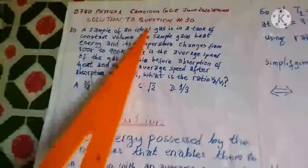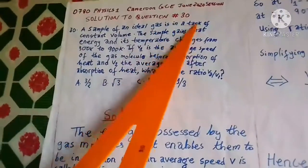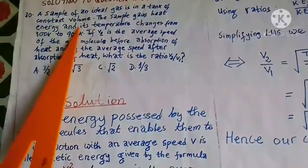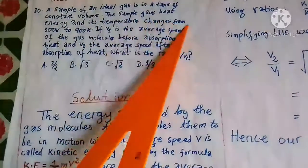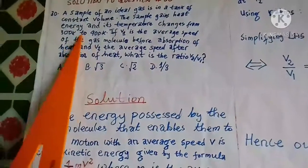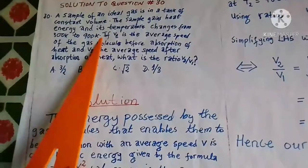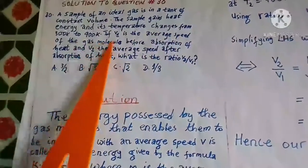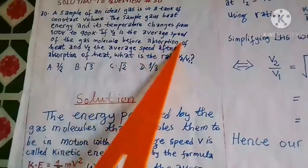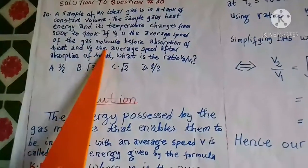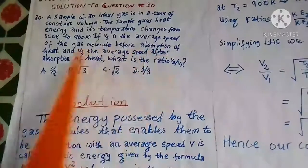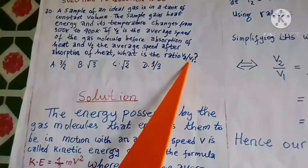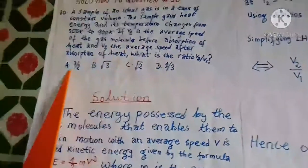A sample of an ideal gas is in a tank of constant volume. The sample gains heat energy and its temperature changes from 300 Kelvin to 900 Kelvin. If V1 is the average speed of the gas molecules before absorption of heat and V2 the average speed after absorption of heat, what is the ratio V2 over V1?